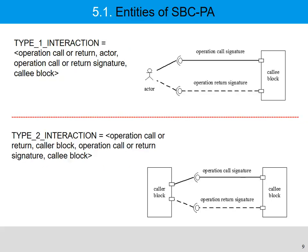Type 1 interaction means an actor interacts with a CoE block with an operational call or return and the operational call/return signature. Type 2 interaction is an interaction between the caller block and the CoE block with operational call signature or operational return signature.